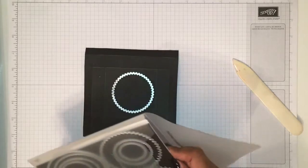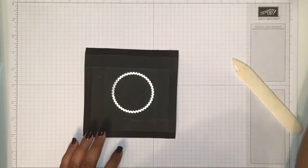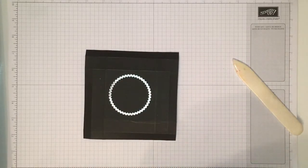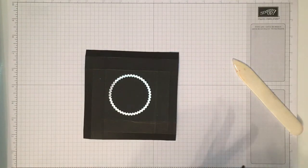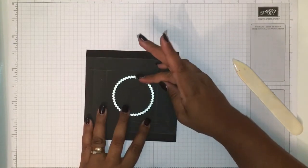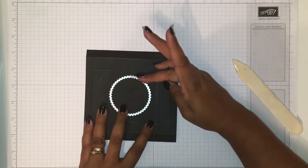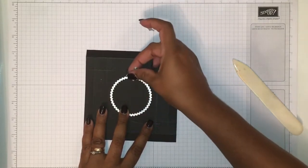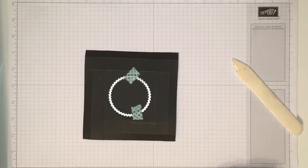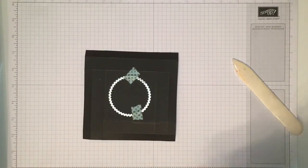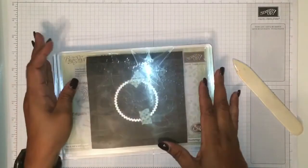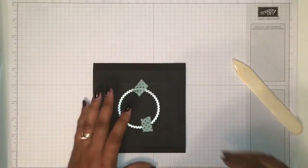This bit needs a circle cut out of it. What I did - I used the Layering Circles Framelits. What I need to do is just to get it into place again because I wanted this to be centered and not moving when we are passing through the Big Shot. And here we are, trying to center this as best as you can.